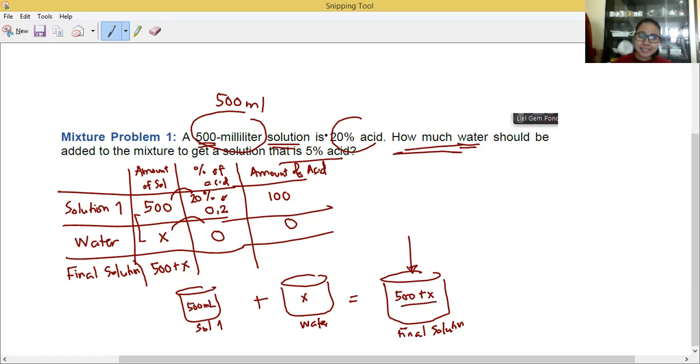How about for the amount of acid? It should be 5% acid, so 0.05. Then we need to multiply both. You have 0.05 times 500 plus x.